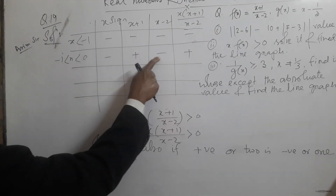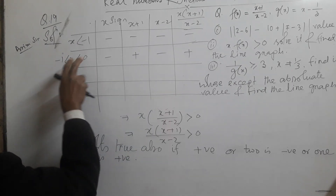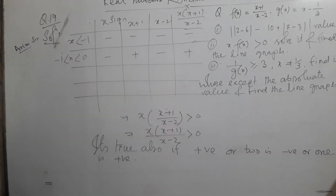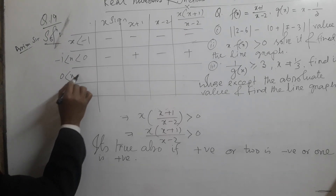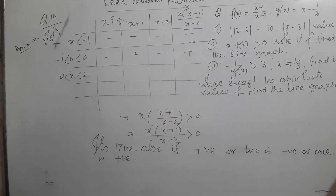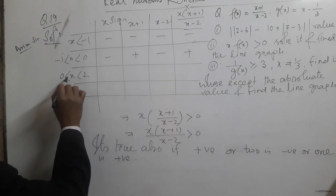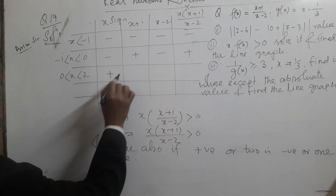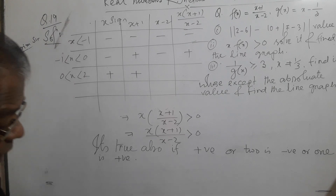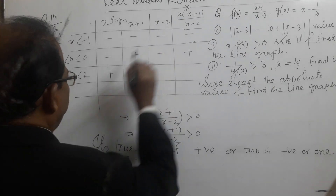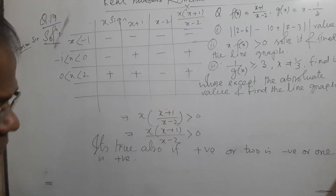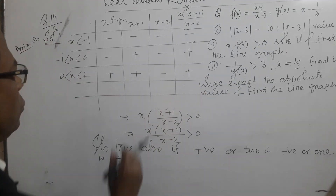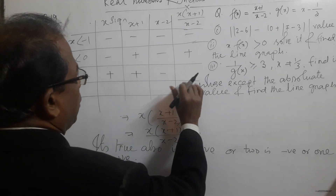When 0 is less than x, the sign is minus. This is the product of two functions: plus and plus. When 0 is less than x less than 2, the signs are plus and plus, but the factor (x-2) is minus, so the product is minus.